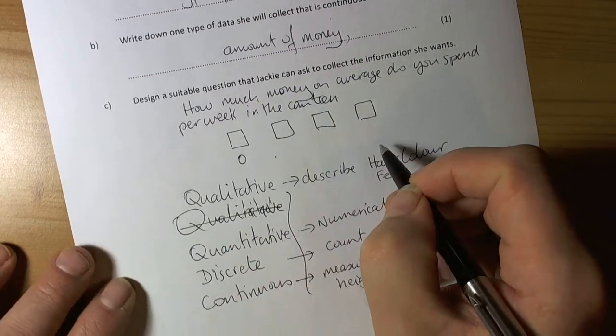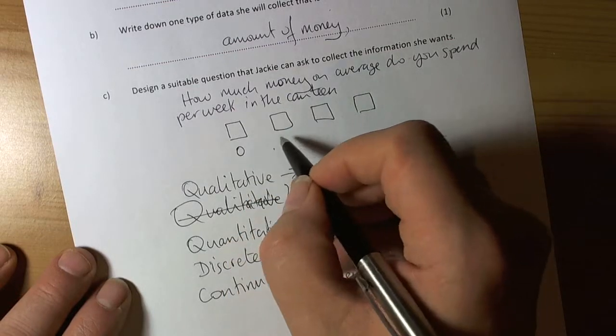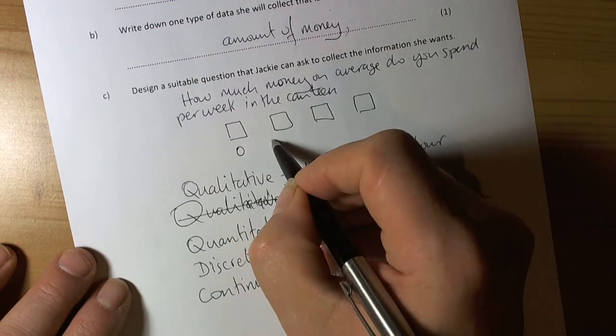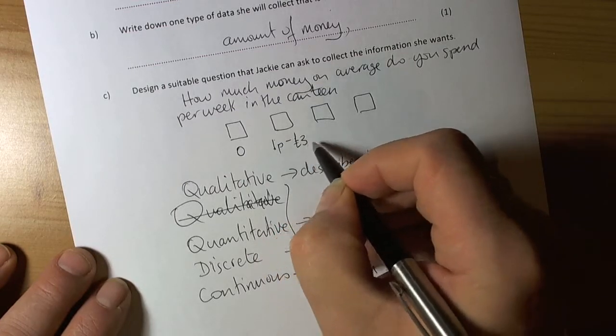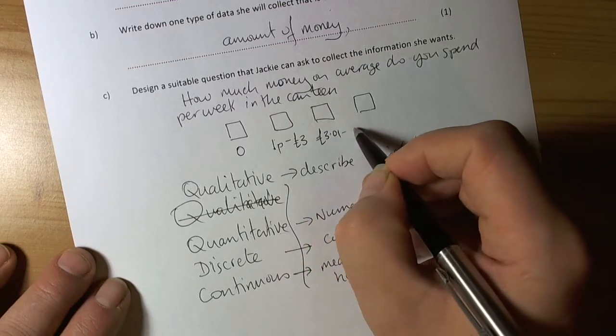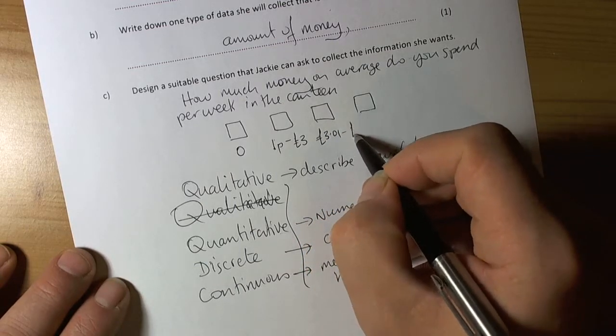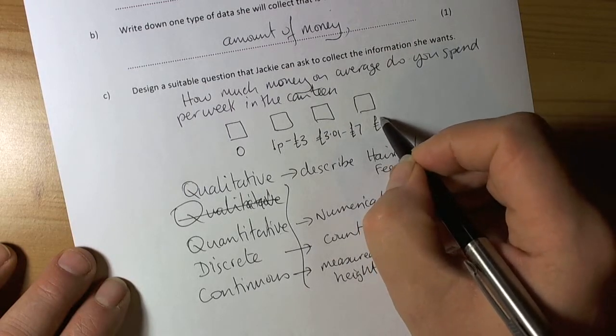We'll have zero because some people might go to the canteen to be with their friends but don't actually spend money. Then we'll have 1p to £3, then £3.01 to £7, and then over £7.